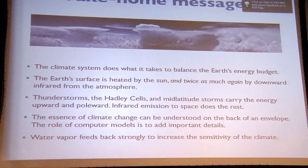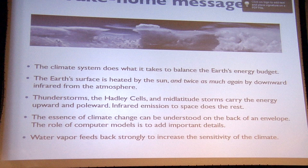Take-home messages. First, the climate system does what it takes to balance the Earth's energy budget — that's basically where the climate comes from. The Earth's surface is heated by the sun, but it's heated twice as much by downward infrared from the atmosphere — this is not a subtle thing. Thunderstorms, the Hadley cells, and mid-latitude storms carry energy both upward so it can get out to space, and poleward so it warms the polar regions and cools the tropics. Infrared carries the energy the rest of the way out to space. The essence of climate change — the basic idea in rough numbers — can be gotten on the back of an envelope; computer models add important details. And finally, water vapor feedback is a very strong factor in determining the strength of climate change in response to something like increasing CO2.